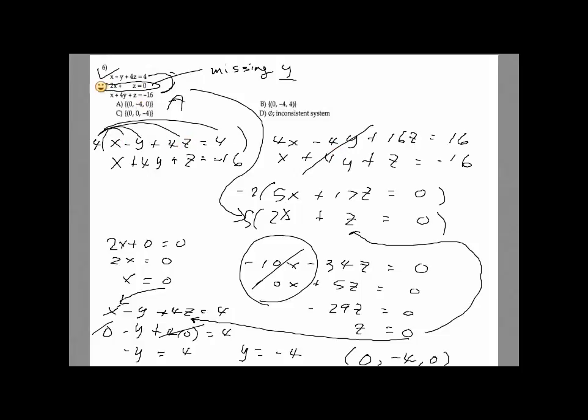eliminate the y easily. So I get one equation in terms of x and z, and then look at the second line is in terms of x and z. So now you get yourself two equations and two unknowns in terms of x and z.